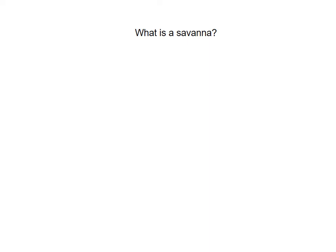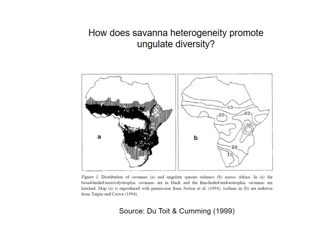In terms of the second question — what is savannah? Well, you should already know this because we've covered this in previous lectures. So let's just remind ourselves about the distribution of savannah in Africa and also then ungulate species richness.